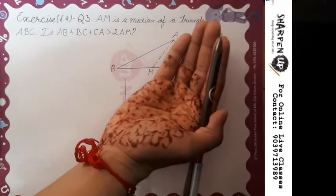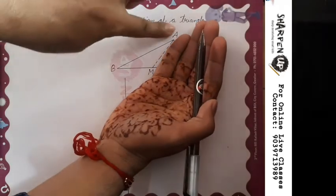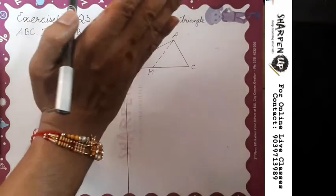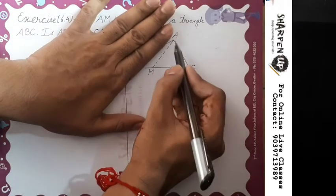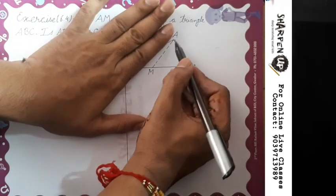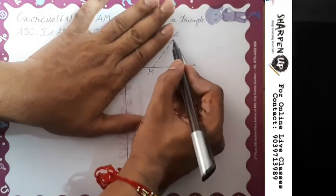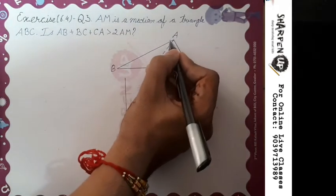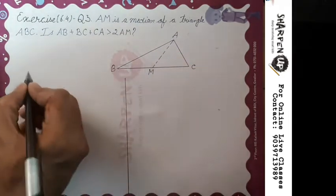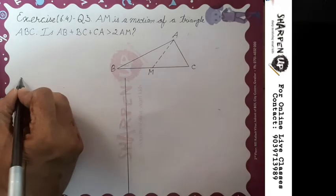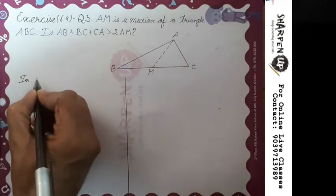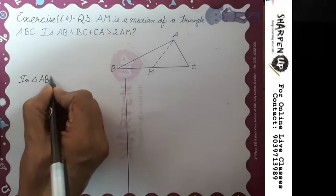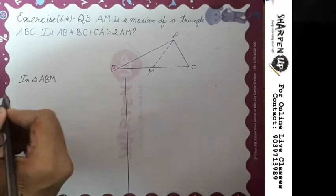As we can see, if I hide one part it forms triangle ABM, and if I hide the other part it forms triangle AMC. So what we will do is take first triangle ABM.